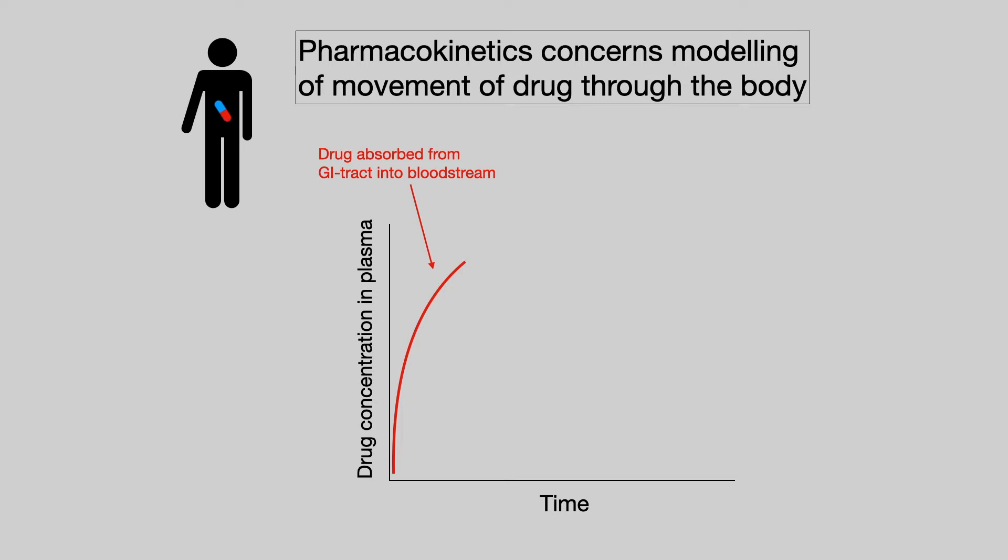So if we look at drug concentration in plasma over time, we see an increasing drug concentration as the drug is absorbed. The drug will reach some maximum concentration after which the drug concentration will start to fall as the drug is eliminated from the plasma until the point where all of the drug has been eliminated.